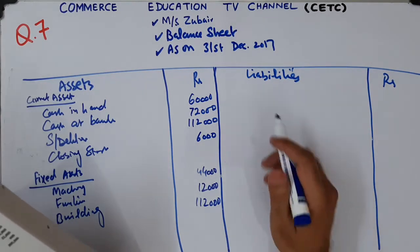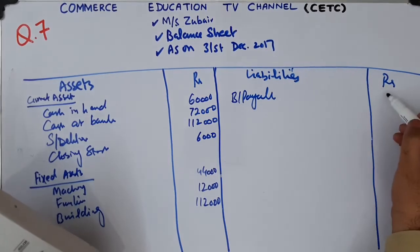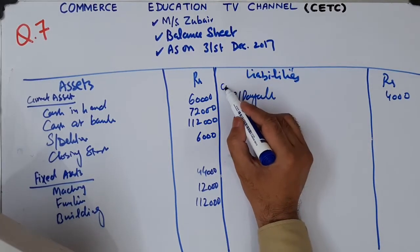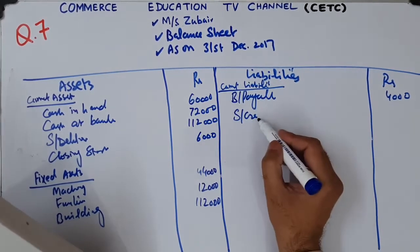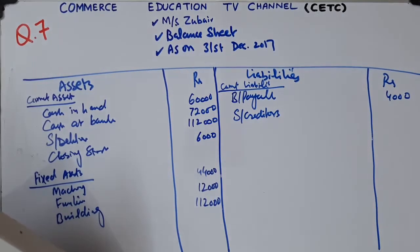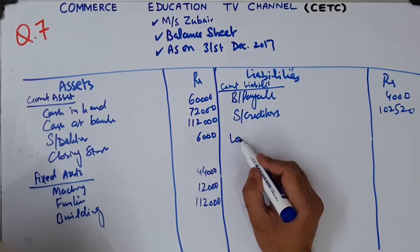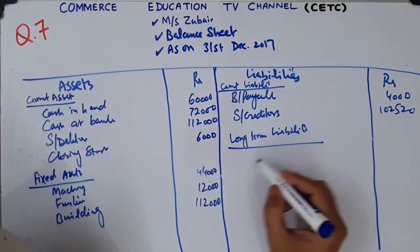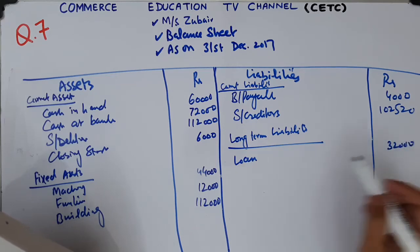Now on the liabilities side, we first write current liabilities. Bills payable: 4,000. Sundry creditors follow. Current liabilities total: 1,02,520. Below current liabilities, we write long-term liabilities. First, loan: 32,000.